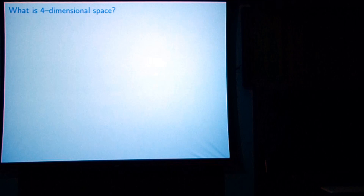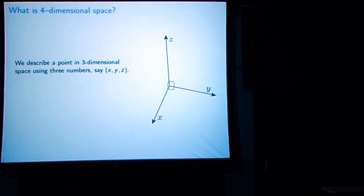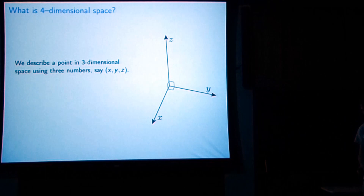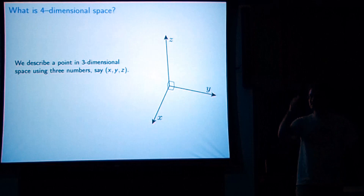I'm thinking of the fourth dimension as a fourth spatial dimension, a fourth dimension of space. Let's take a step back and think about three dimensions. How do we describe a point in three-dimensional space? We need three perpendicular axes: x, y, and z. To do four dimensions, I just add an extra perpendicular dimension.